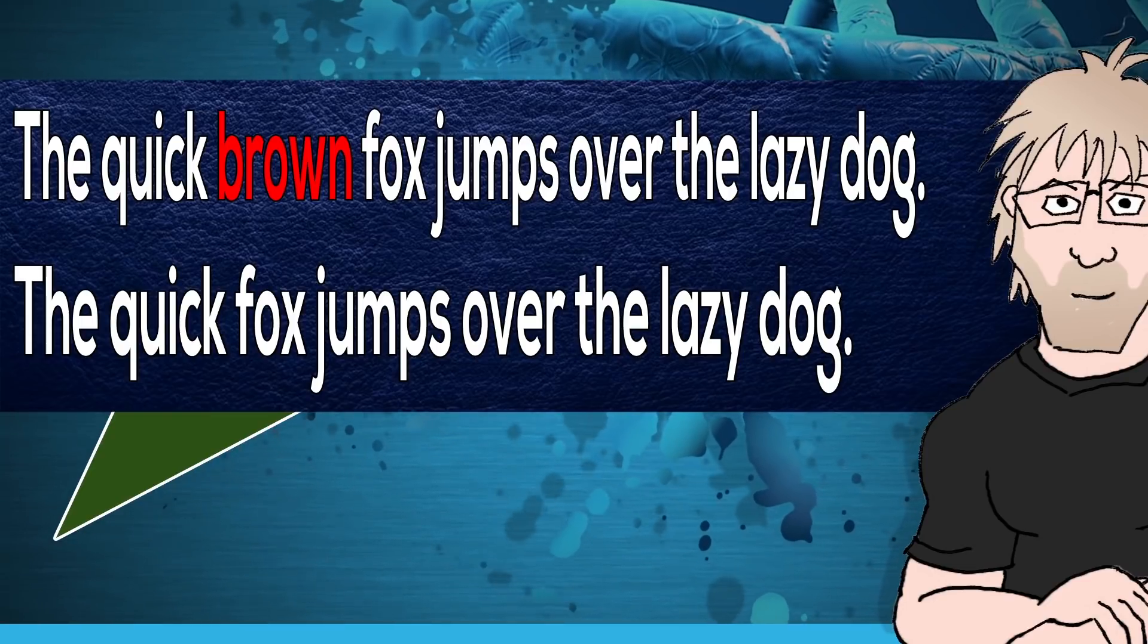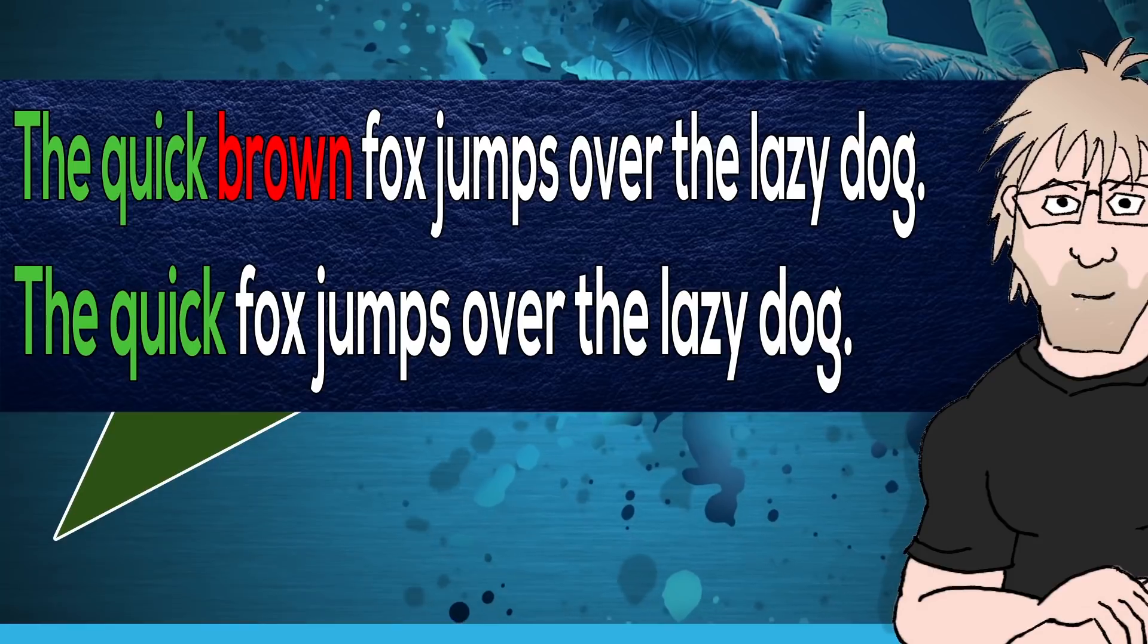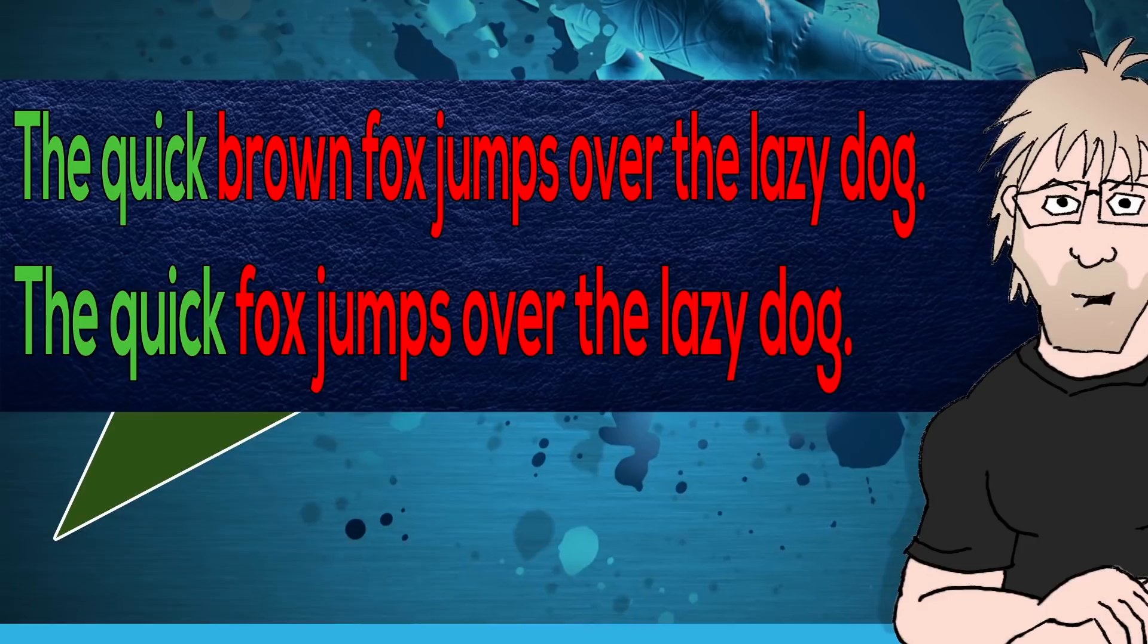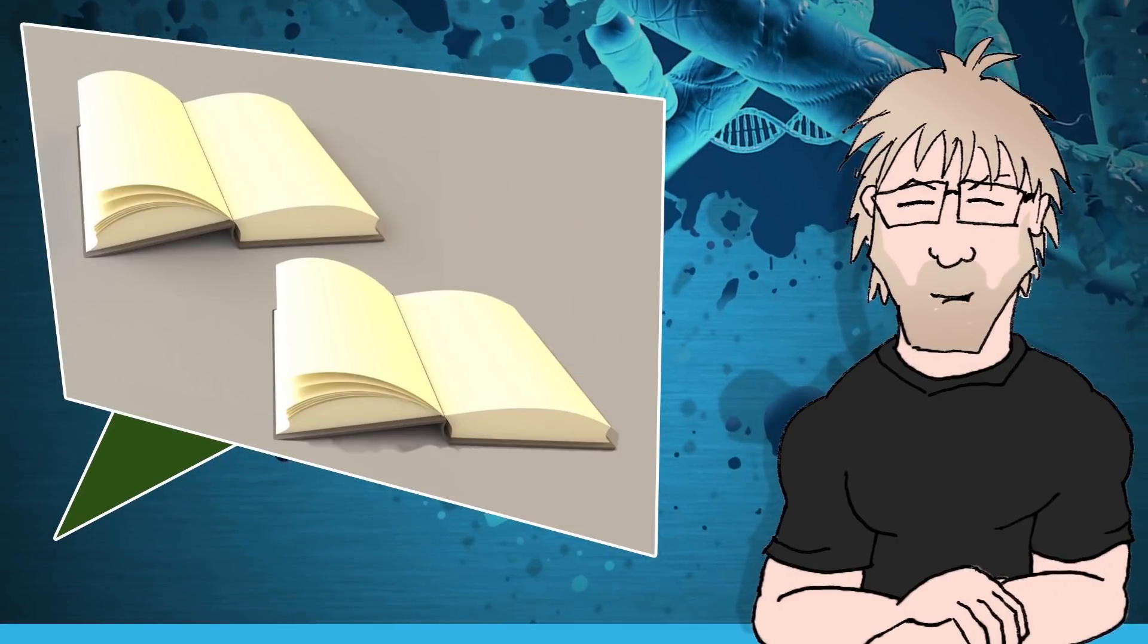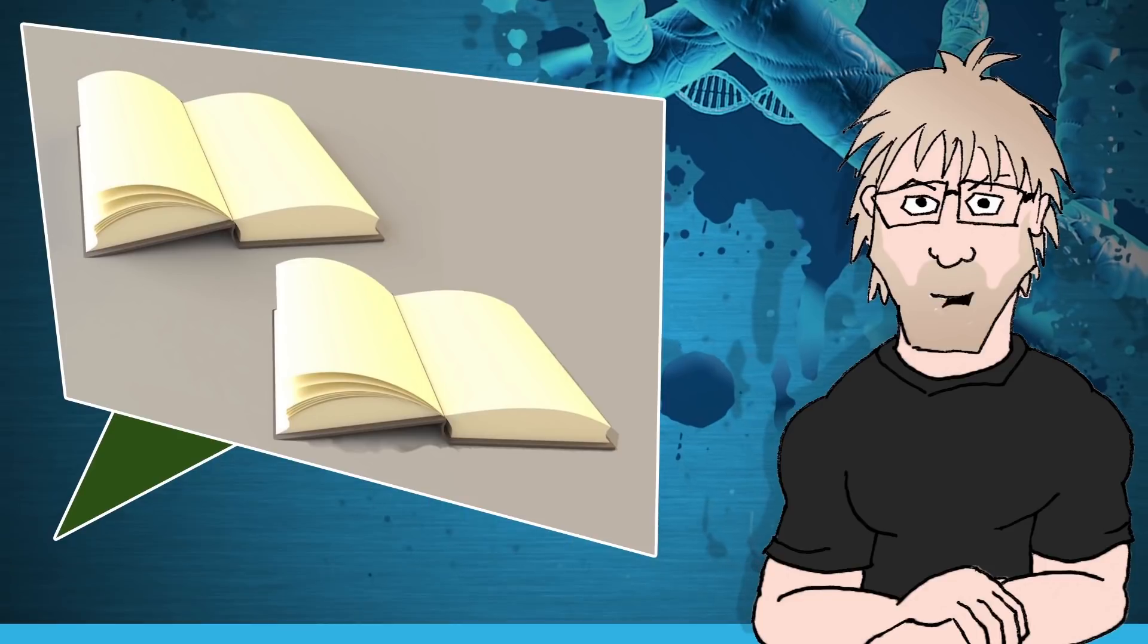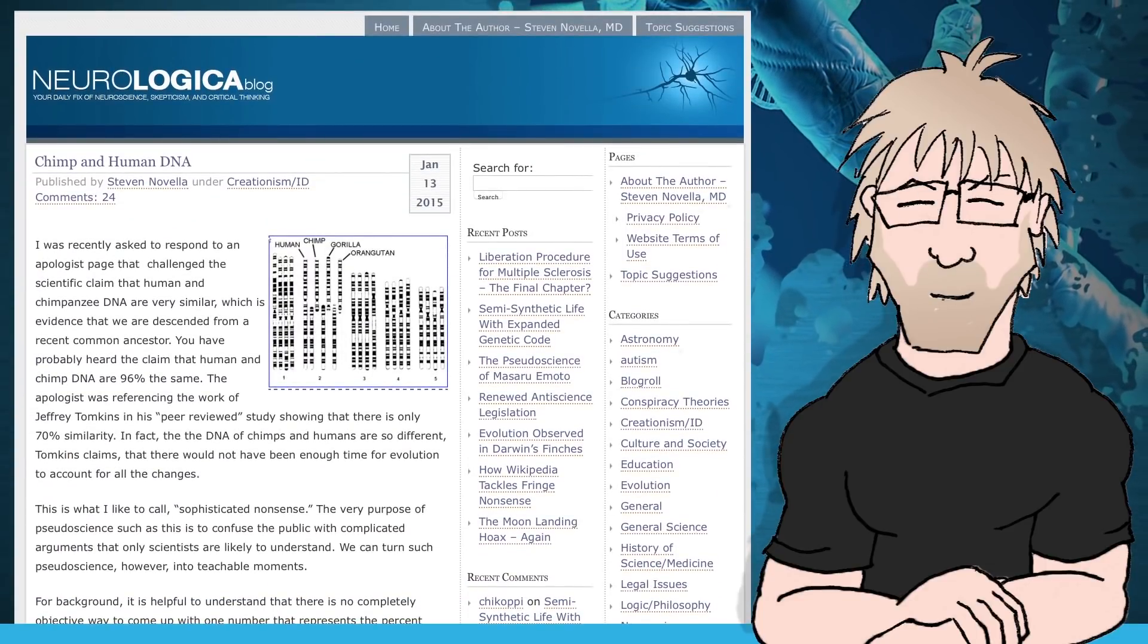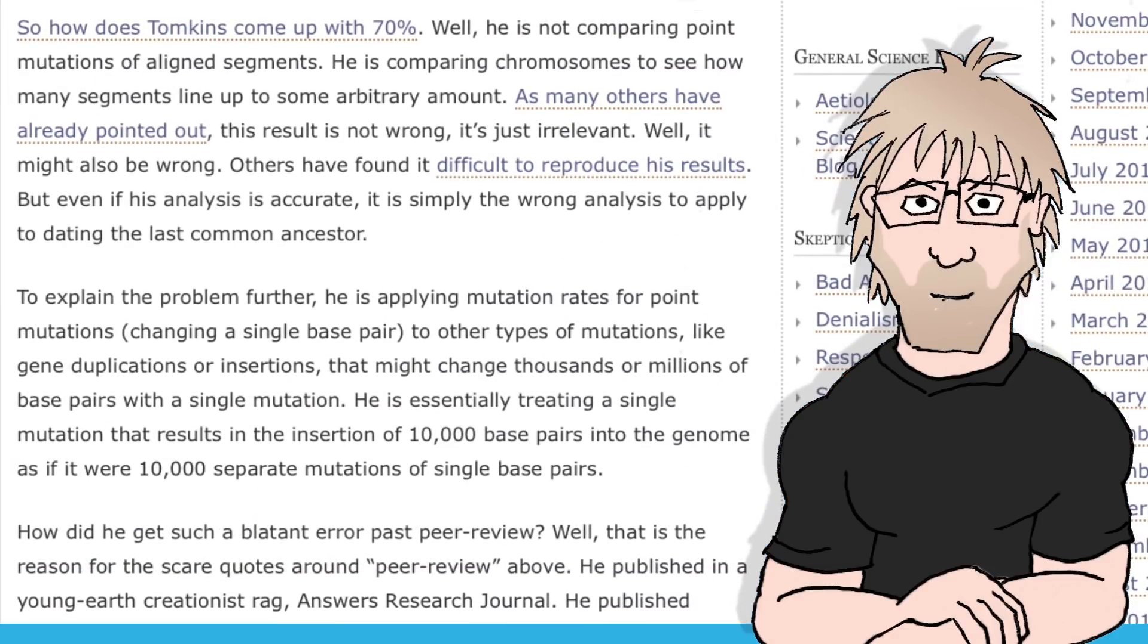So, the quick is all he counts as similar, never even considering the fox jumps over the lazy dog. By Tompkins' method, if you took two identical books and tore the first page out of one, you would determine that the two books have 0% similarity. Not exactly a useful method of counting. As bad as this deliberate gap-skewing problem was, it turns out there was an even bigger flaw in Tompkins' 70% study.